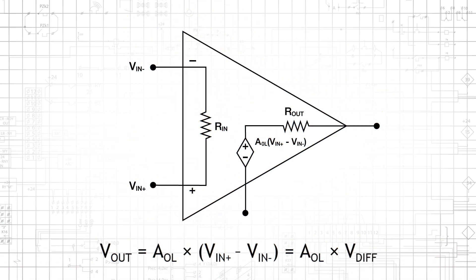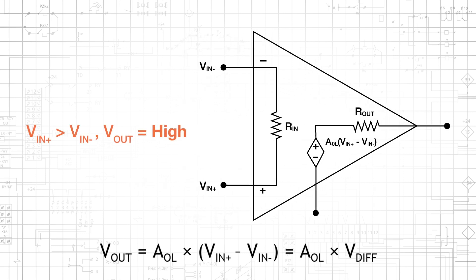If we think of the comparator's output as a digital signal, we can say that the comparator generates a logic high when the voltage at the non-inverting input is higher than the voltage at the inverting input, and a logic low when the voltage at the non-inverting input is lower than the voltage at the inverting input.